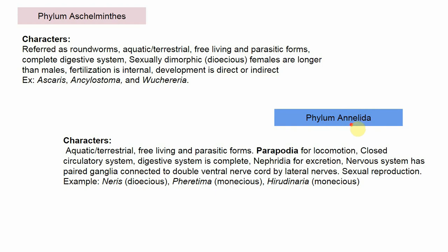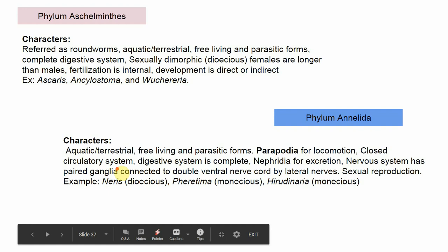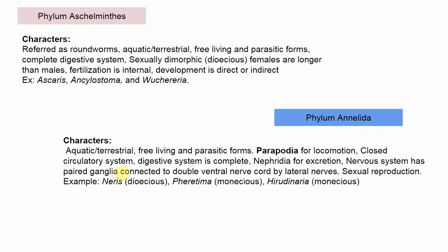The next phylum is Annelida, the first phylum to show metamerism — the body is externally segmented. Some are aquatic, some terrestrial; free-living and parasitic forms exist. Locomotive structures called parapodia are found in Nereis. The circulatory system is a closed type, meaning blood flows inside blood vessels. In contrast, open circulatory systems have blood flowing directly into the body cavity, bathing tissues and organs.